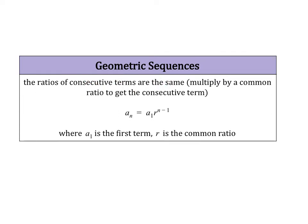That's a fancy way of saying that to get to the next term, you're multiplying by the same common ratio. You can test this by taking the second term and dividing it by the first term, then the third term divided by the second, and that ratio should be the same.